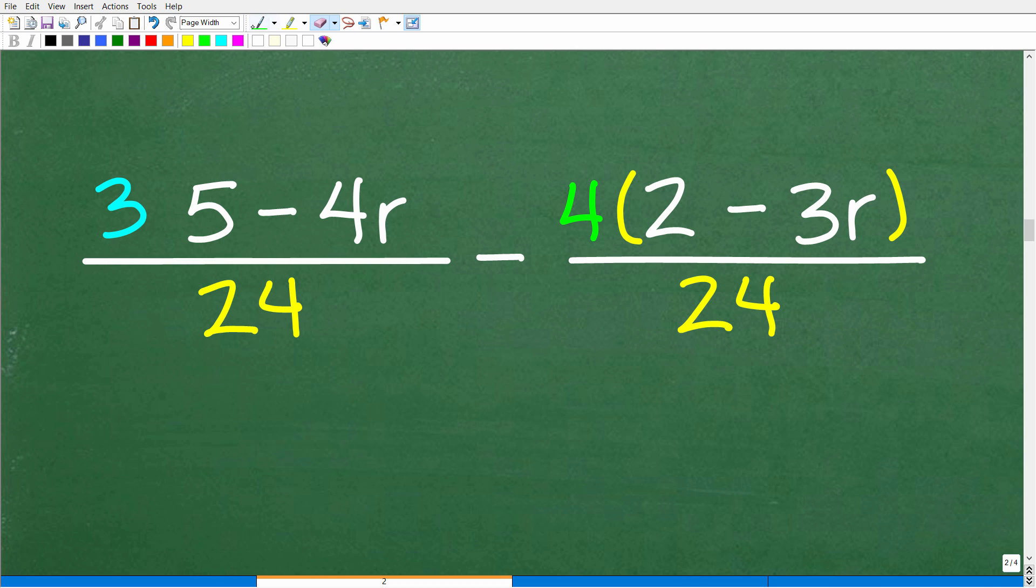Super common mistake, actually. And if you remember one thing from this video, that is to put in your parentheses. So here we're going to have to distribute this three to this five and 4R. We have the distributive property situation.